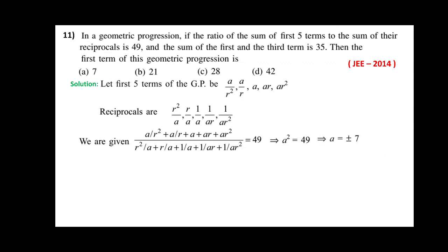From A² = 49, we find A = ±7. Since R² > 0 (square term is always positive), A should be positive, so A = 7. Also, 1/R² + 1 = 5, which implies R² = 1/4. Therefore, the first term = A/R² = 7 ÷ (1/4) = 7 × 4 = 28. Therefore, the right option is 28, that is option C.